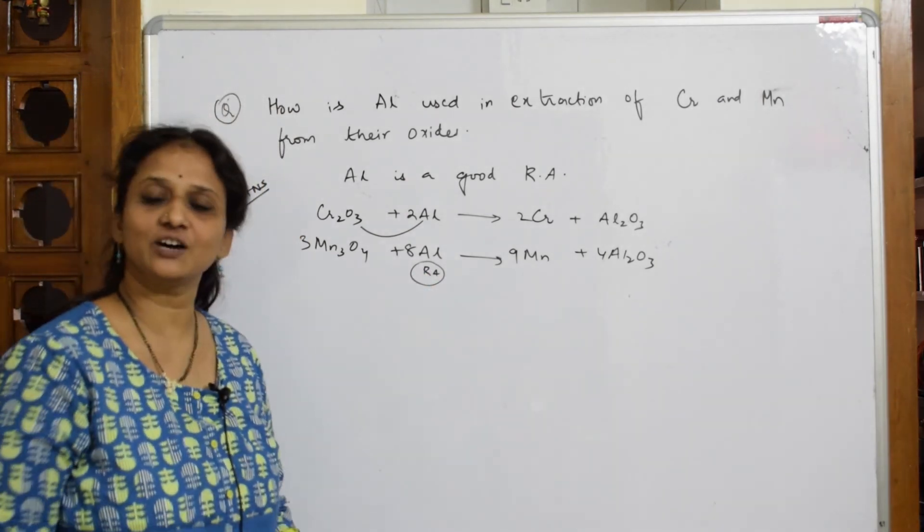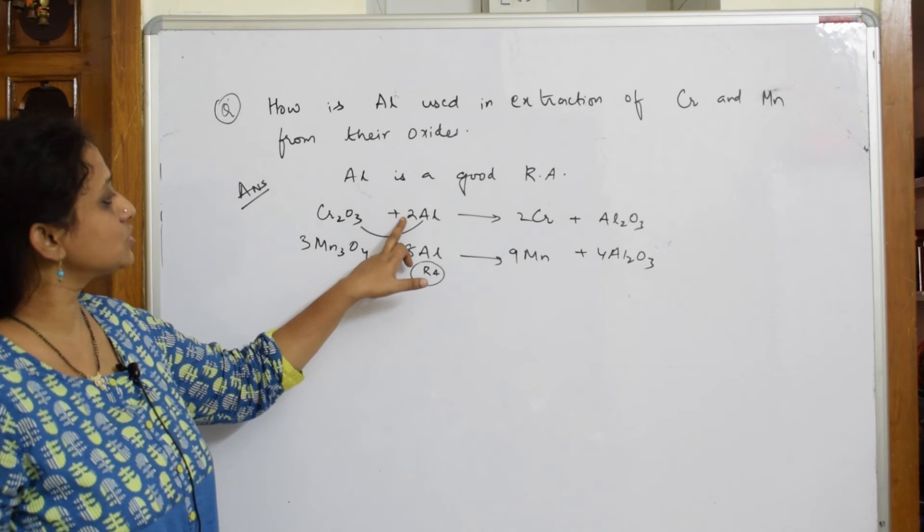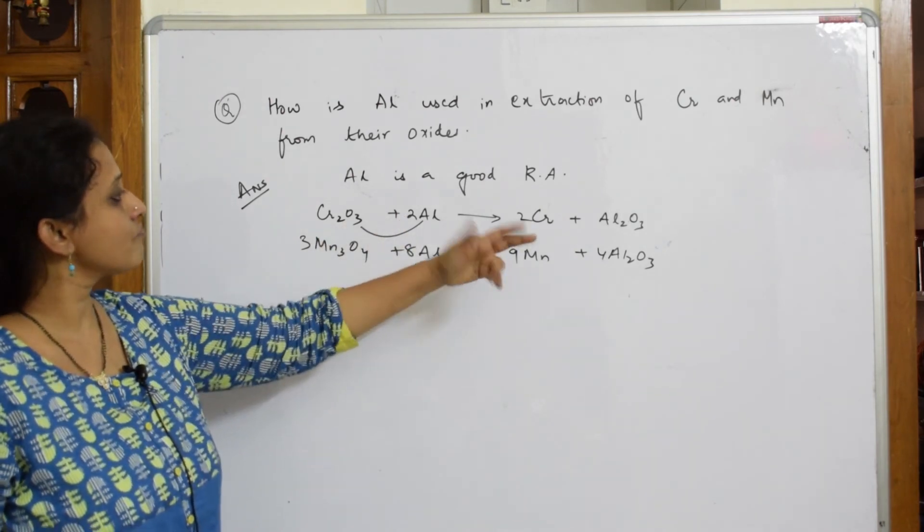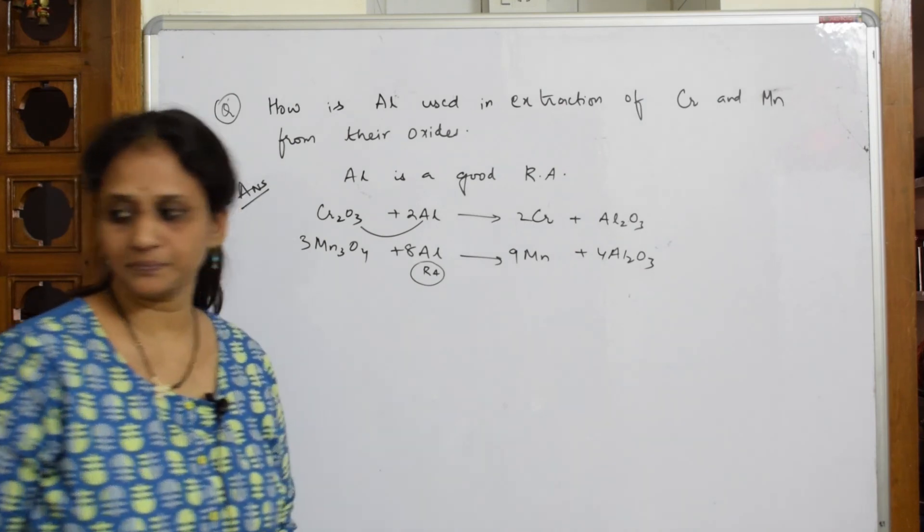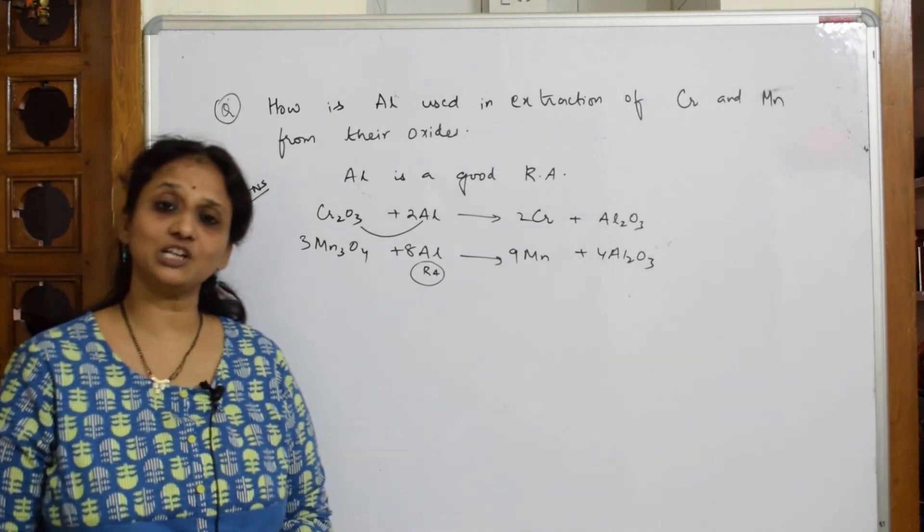Now this one also, aluminum is two here, chromium is two here, okay done. So this you can write this use for aluminum.